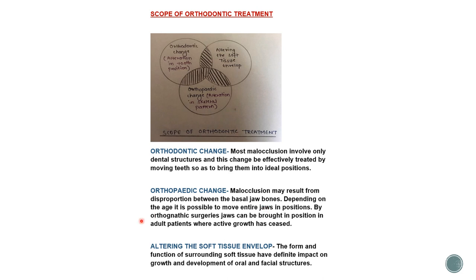Depending on the age, it is possible to move the entire jaw into position using orthognathic surgeries. If any problem exists with jaw positioning, correction is done by functional appliances during the growing phase, or by orthognathic surgeries after growth is completed. Altering the soft tissue envelope means altering the musculature as well. This is the scope of orthodontic treatment.